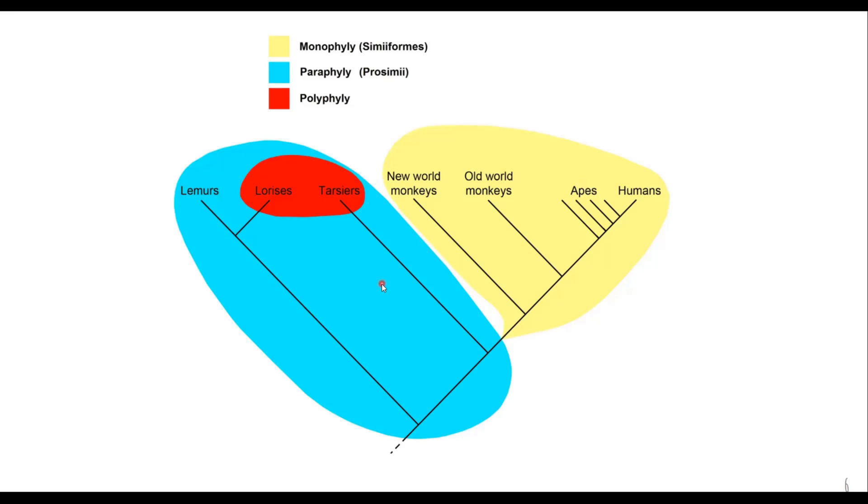Whereas in paraphyletic what we said or in a paraphyletic tree that we do not consider all the descendants of an ancestor. For example if you consider this ancestor or you consider this ancestor, this part is also its descendants. However, we are just considering this part. That is the lemurs, lorises and tarsiers. So this part is a paraphyletic.